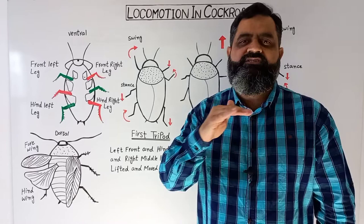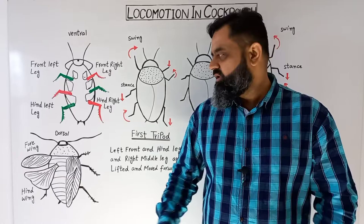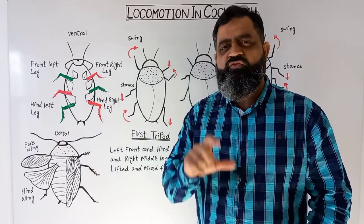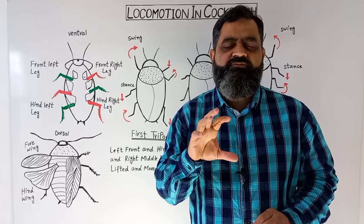When the cockroach needs to fly, it uses its wings. I have made a diagram of the dorsal view of the cockroach. On the dorsal surface — the back side — there are two pairs of wings. The top pair, known as forewings, are heavy and not involved in flight. If you lift the forewings, you will see a pair of hind wings which are lighter in weight and are involved in flight.